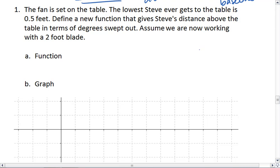Now what we're going to do is take our little fan, which still has a radius of 2, and set it on top of a table.